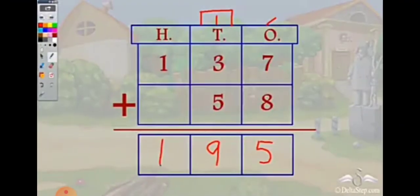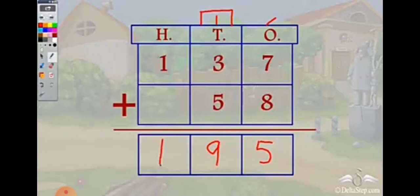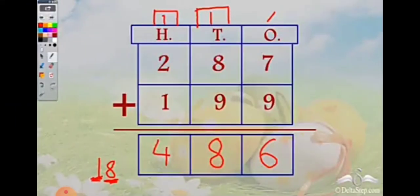Now 7 plus 8 equals 15. Should we write 15 as it is? No — we write 5 and carry over 1. Then adding the tens: 1 plus 3 is 4, and 4 plus 5 is 9. The hundreds digit 1 comes down as it is because there is no carry over in the hundreds place. The answer is 185.